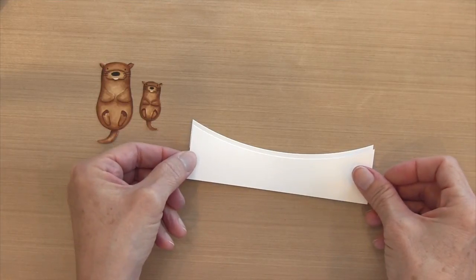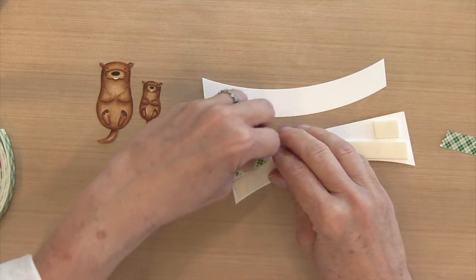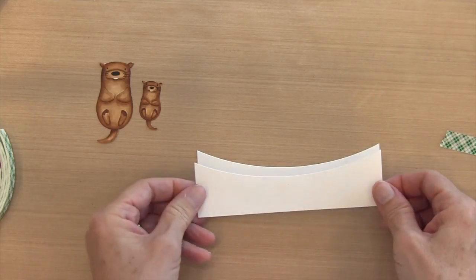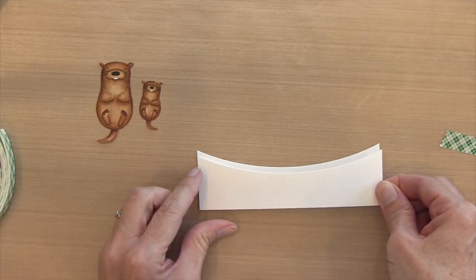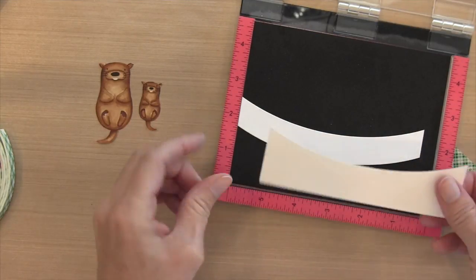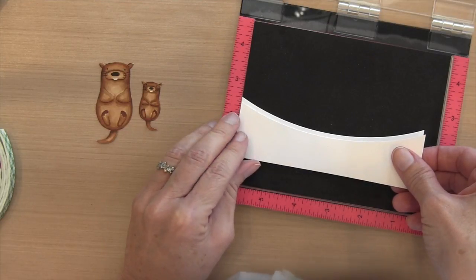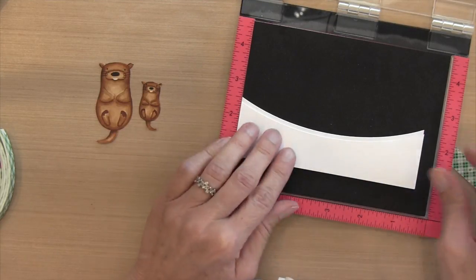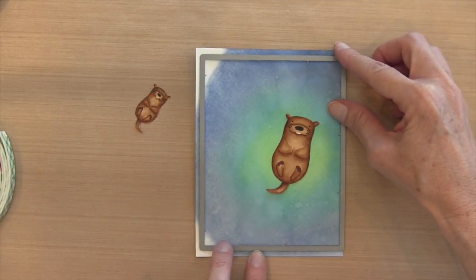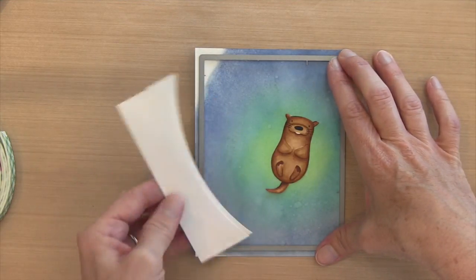Then again, match up the pencil lines with the die and run it through the Big Shot. Here's how I'm going to layer these to add a little bit of something interesting on the card. I'll flip over the larger one and put some Scotch foam tape. I had trouble lining it up exactly, so I decided to grab my MISTI and used the left edge. I put the bottom part against the left edge, then figured out I wanted about an eighth of an inch down. I lined up the larger one against that left edge, and when I pressed down, everything lined up perfectly—another great use for the MISTI.